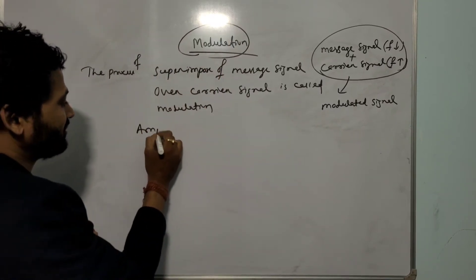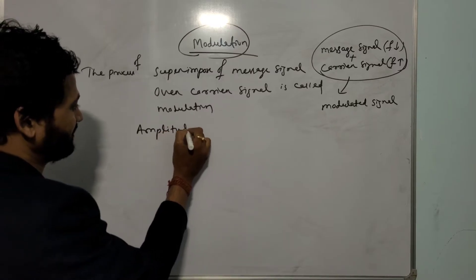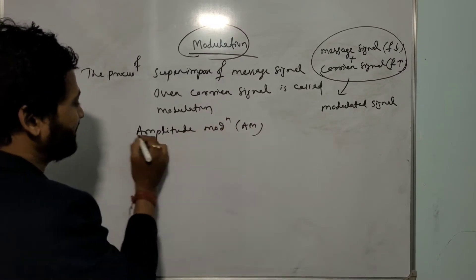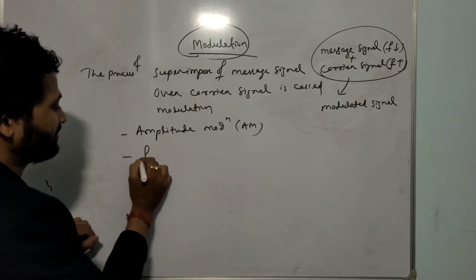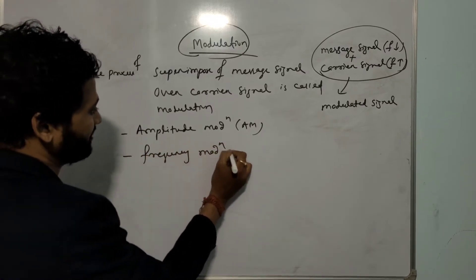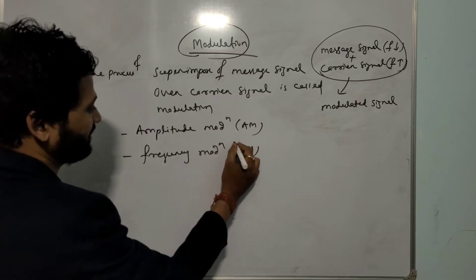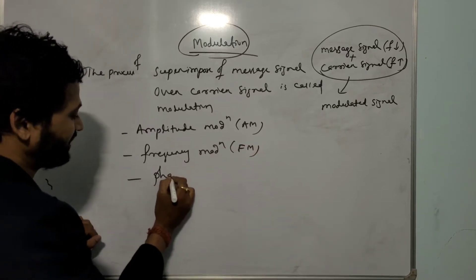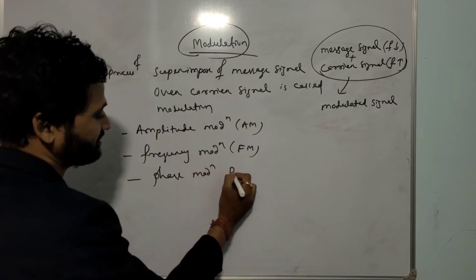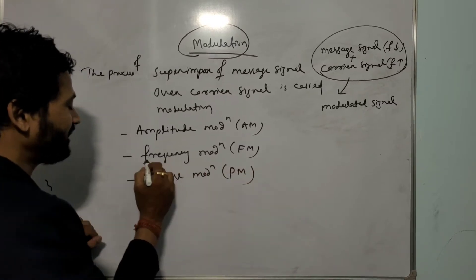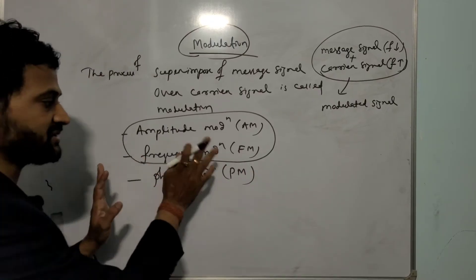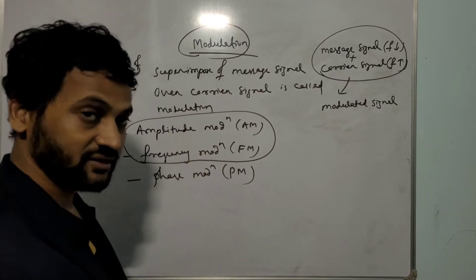Modulation are three types. One is amplitude modulation (AM). Second is frequency modulation (FM). And third is phase modulation (PM). I will discuss amplitude modulation and frequency modulation, giving just a basic idea in this lecture.